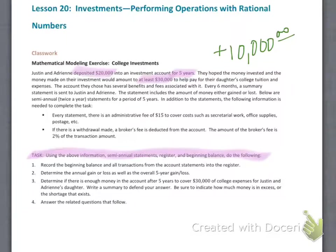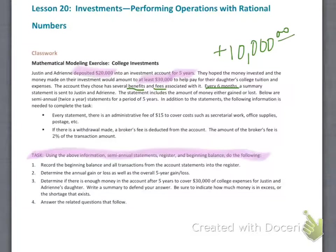Every six months, a summary statement is sent to Justin and Adrienne. The statement includes the amount of money either gained or lost. That's all based on what this money is invested in. When you invest in something of this nature, the money goes into maybe a couple of companies — bigger companies like Nike, McDonald's, and several others. If those companies do well, their stock price goes up and you make money. The vice versa can happen too — a company doing poorly, or the economy going south.